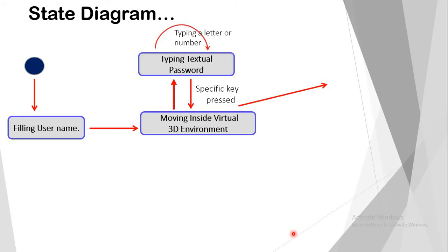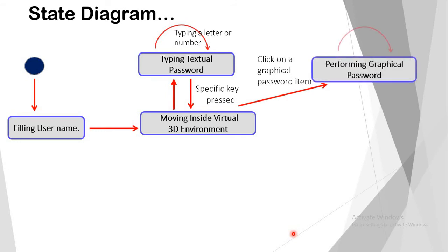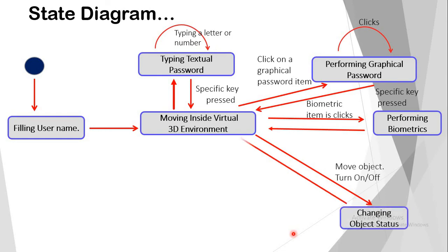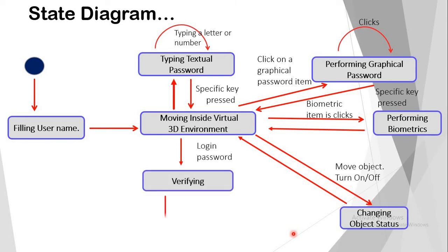The next step is performing a graphical password. After completing that, the user enters the next step, which is performing biometric authentication. After finishing this, the user enters the next step called changing object status. After finishing all the authentication, the passwords are verified. If the passwords are correct, access is granted to the user. If not, the user is directed to start again from the beginning.